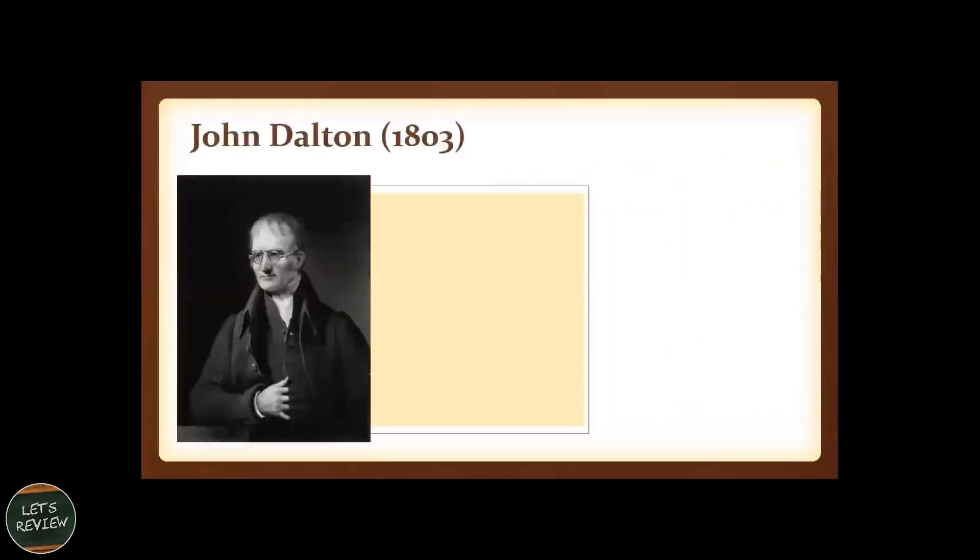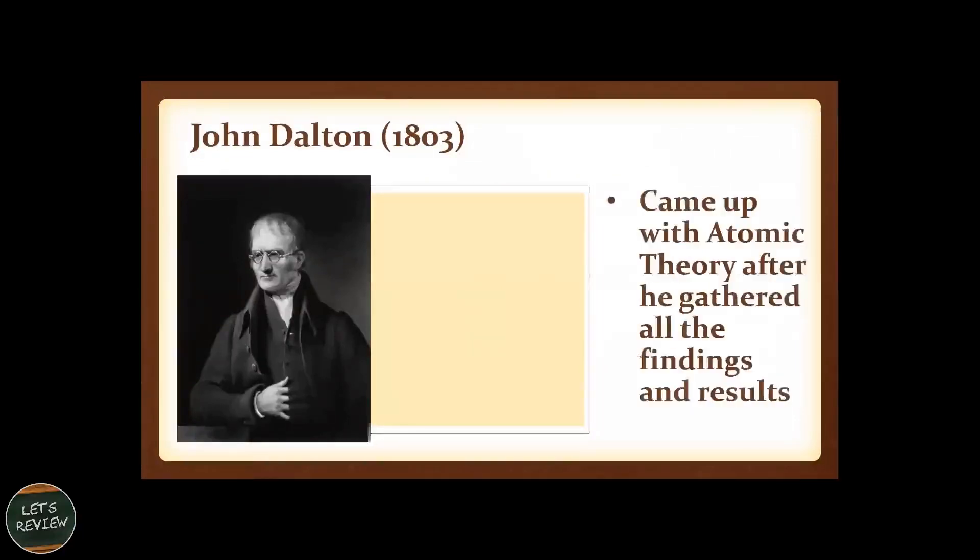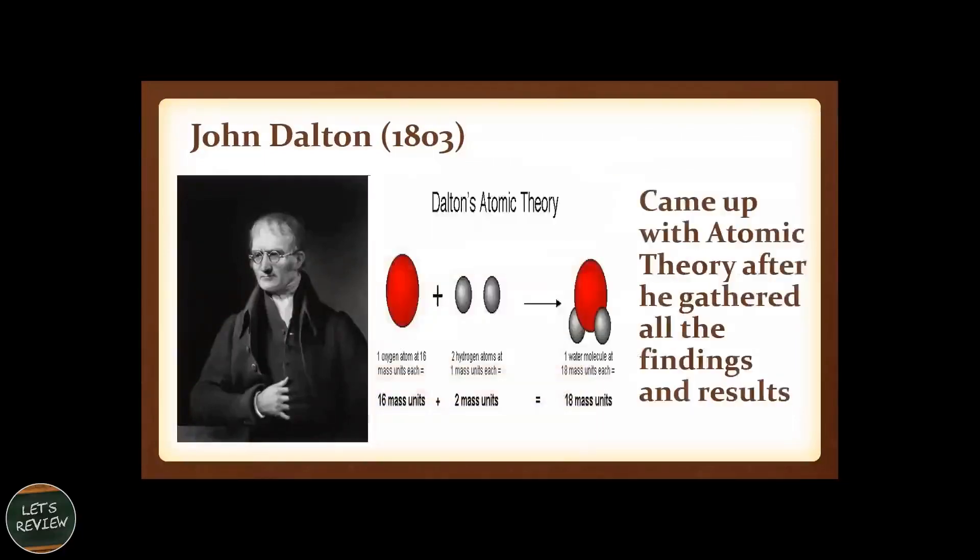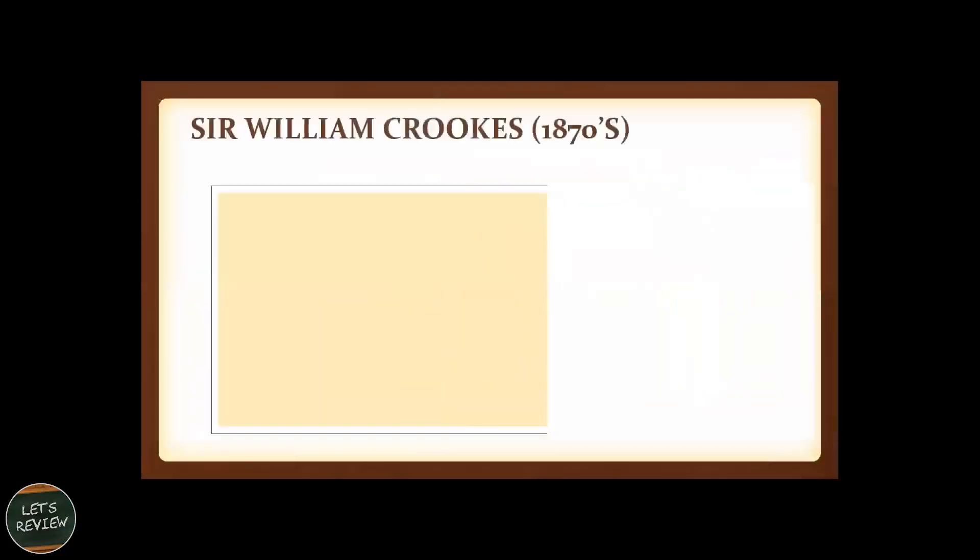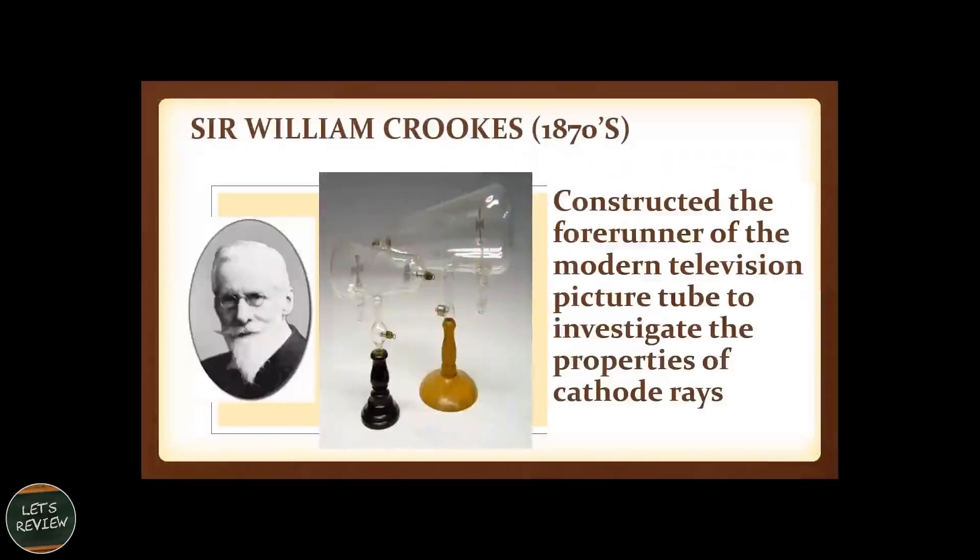1803, followed by John Dalton. He came up with atomic theory after he gathered all the findings and results. Then Sir William Crookes constructed the forerunner of the modern television picture tube to investigate the properties of the cathode rays.